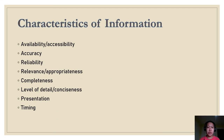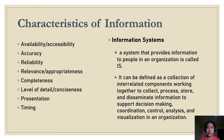Characteristics of information: it must be available and accessible, accurate, reliable, relevant or appropriate, complete, concise, and timely. An information system is a system that provides information to people in an organization. It can be defined as a collection of interrelated components working together to collect, process, store, and disseminate information to support decision-making, coordination, control, analysis, and visualization.